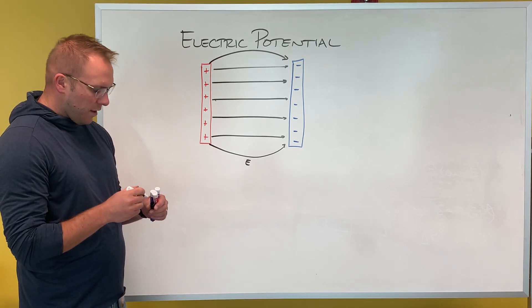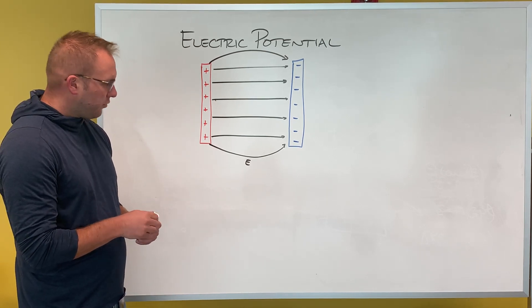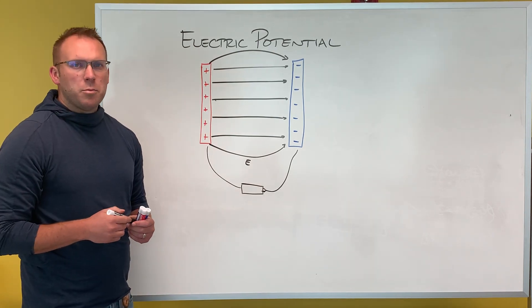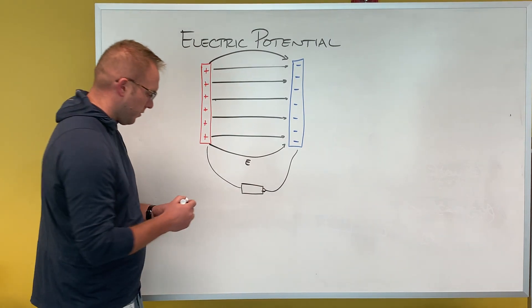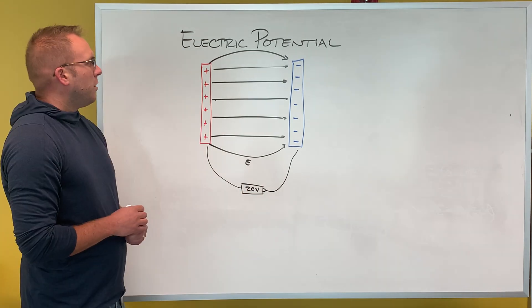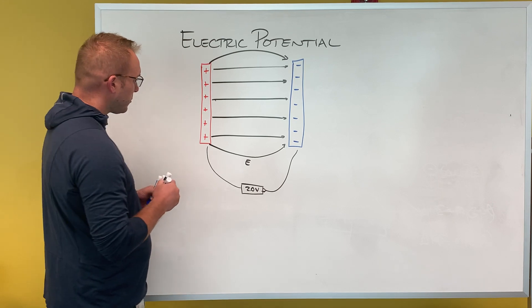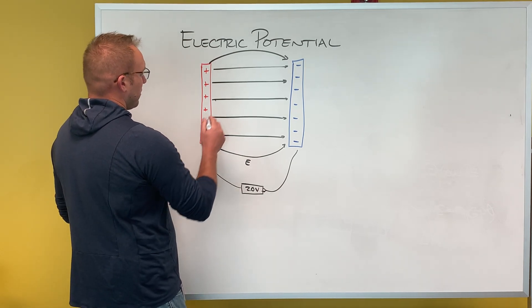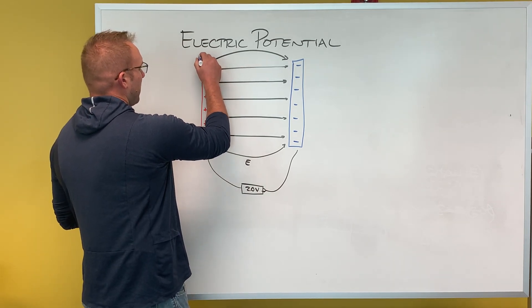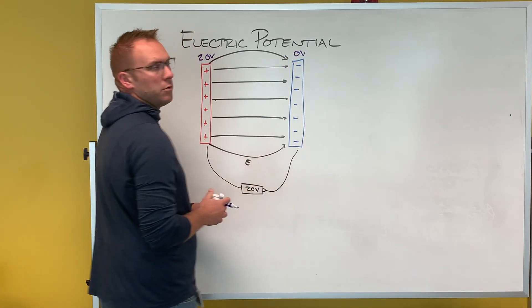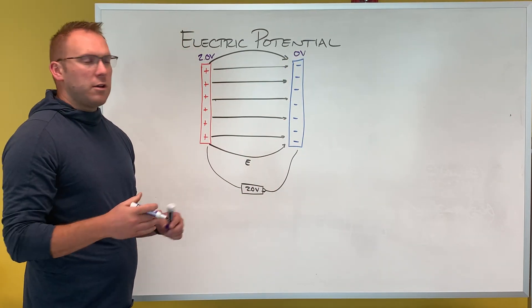So what does electric potential look like? Well, usually these are connected to a battery and that battery is going to provide some potential difference. For here we'll call it two volts. So what does the electric potential look like inside there? What that means is essentially if this has a voltage of two volts, this would have a voltage of zero volts. That's one option that would work.